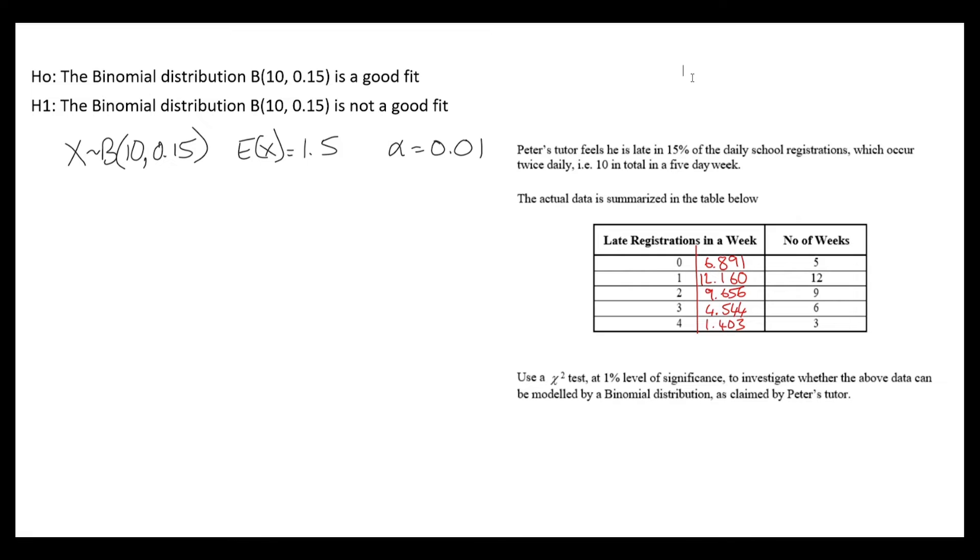I'm actually going to add one more row here. From what the teacher observed, there were no weeks where Peter was late 5 times or more. But the binomial distribution does consider getting up to and even more than 5 times. I can see the expected values are reducing from 4.5 to 1.4, so I am expecting the rest of these to be quite small. I'll group them all together. The expected number of weeks out of 35 for there to be 5 or more lates is 0.346.